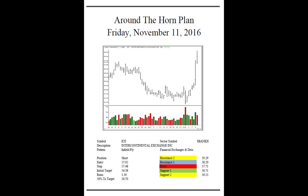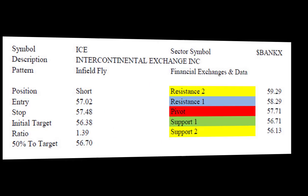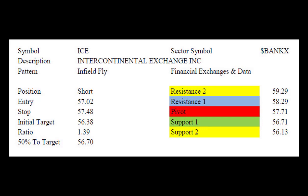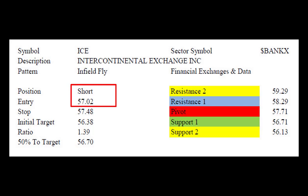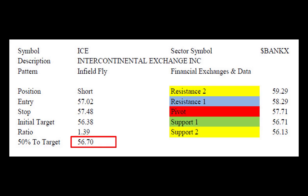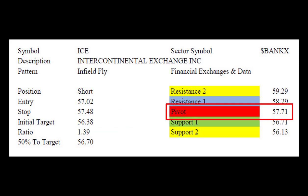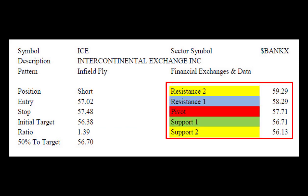If you look at the plan for Friday, this is Intercontinental Exchange Incorporated, ticker symbol ICE. We see here that we had a 57.02 short sale entry with a 57.48 stop loss, a 56.70 50% to target level, and a 56.38 target. So why is all that stuff on my trading plan, what am I using it for, and what's this pivot line thing telling me? These are all the important considerations going into any day if I'm going to be trading one of these setups.